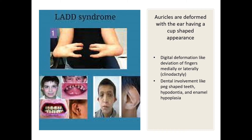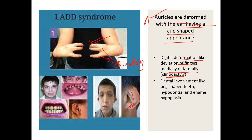A in LADD stands for auricles — the auricles are deformed, with a cup-shaped appearance. You can see the auricles are deformed here, not normal looking. D stands for digital deformation — deviation of fingers medially or laterally, clinodactyly. You can see the deviation of fingers laterally or medially — this is clinodactyly.